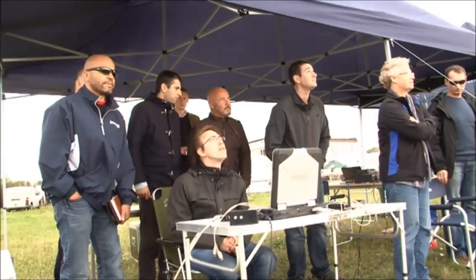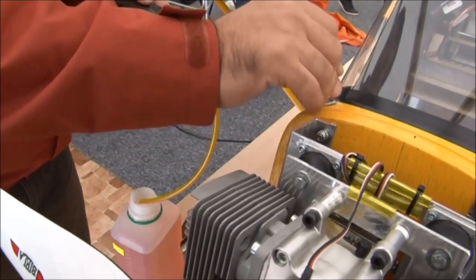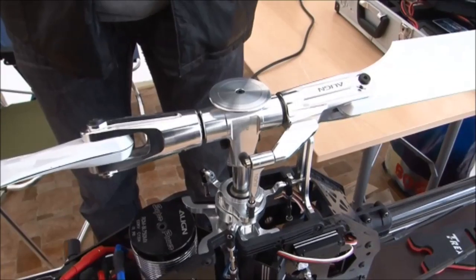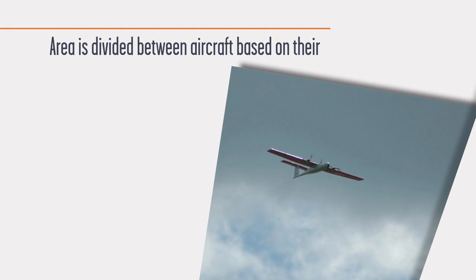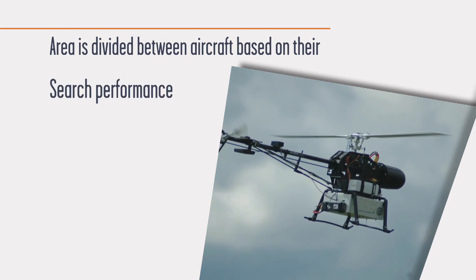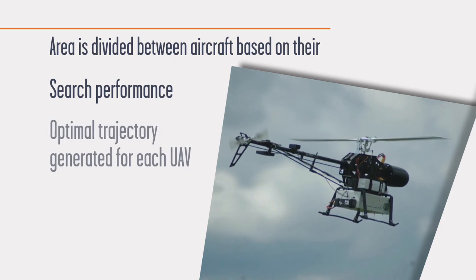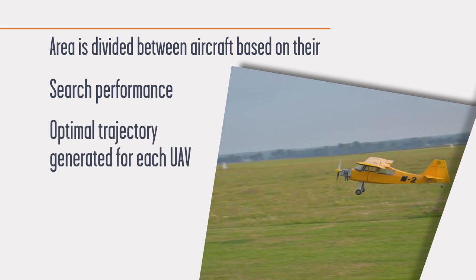The aim of the simulation group was to develop software that optimized UAV fleet efficiency during the locate, target, and track mission. The most challenging part was developing software that generates customized trajectories for various platforms. The aim of the optimization is to perform tasks in the shortest time. The area is divided between aircraft based on their search performance, and finally an optimal trajectory is generated for each UAV.